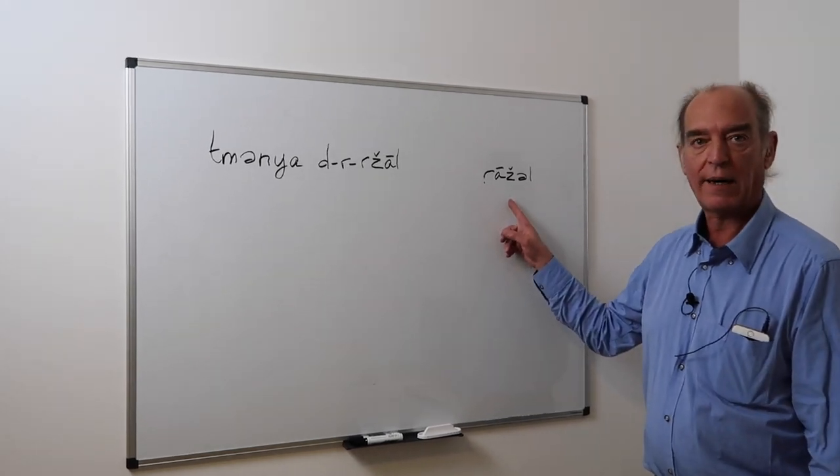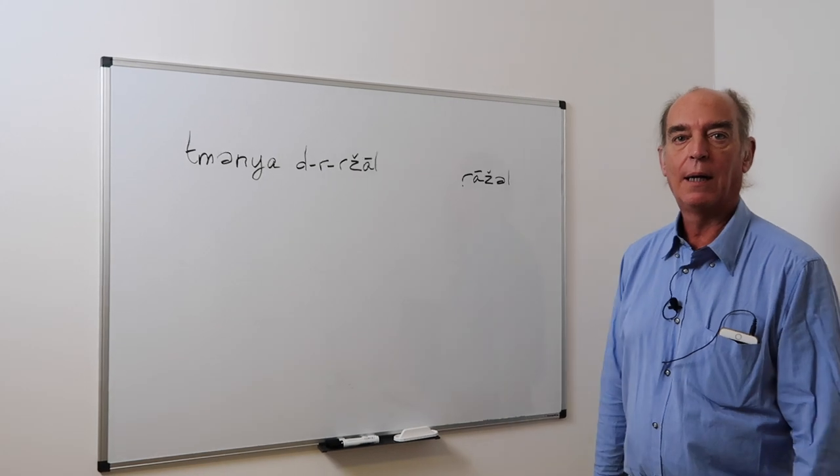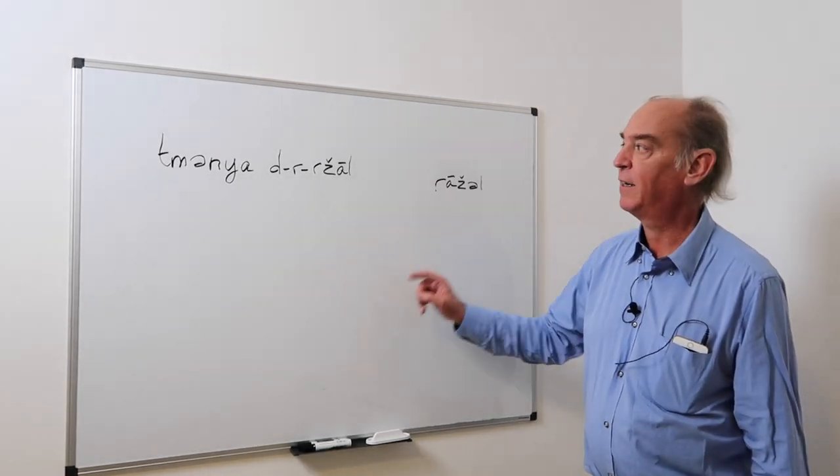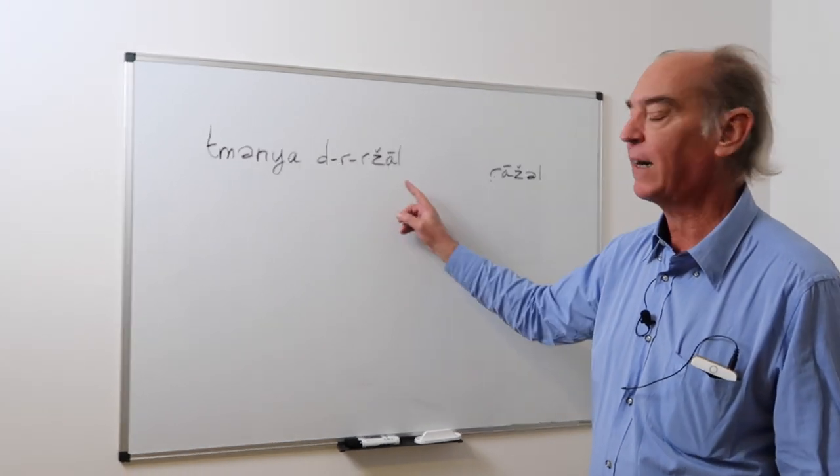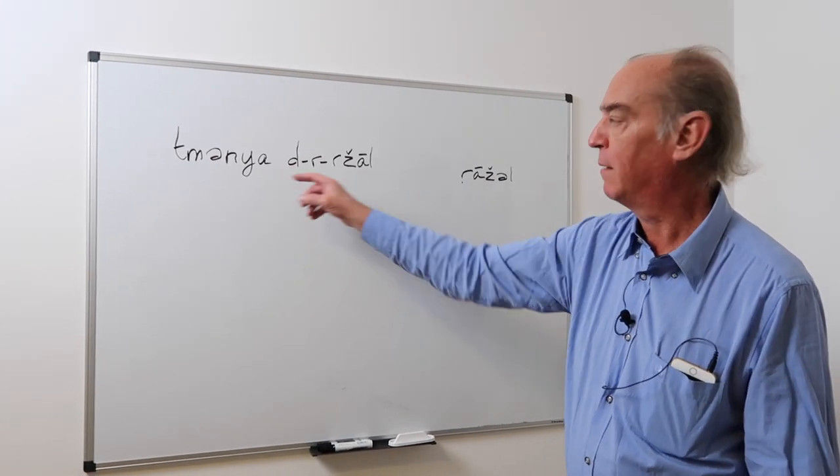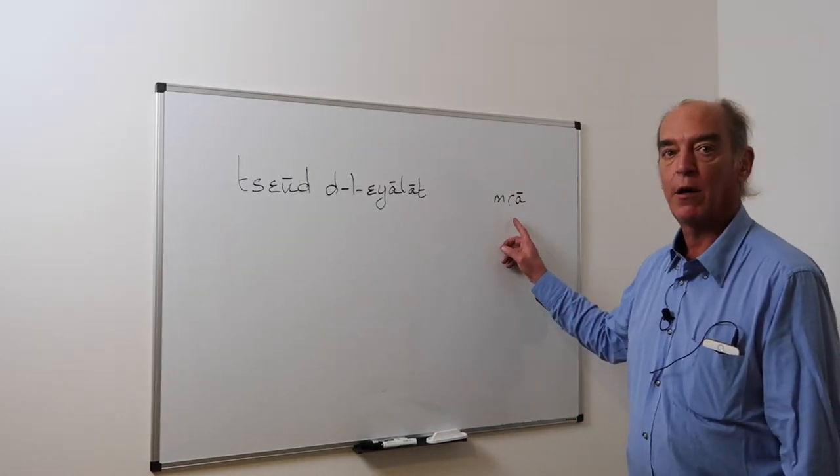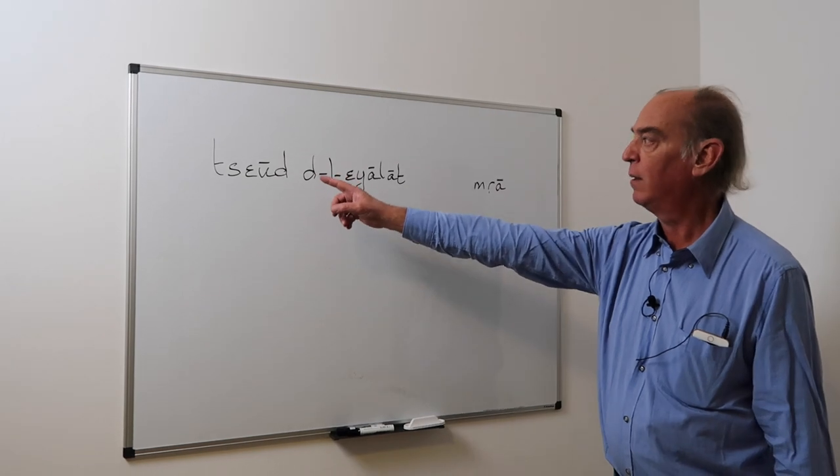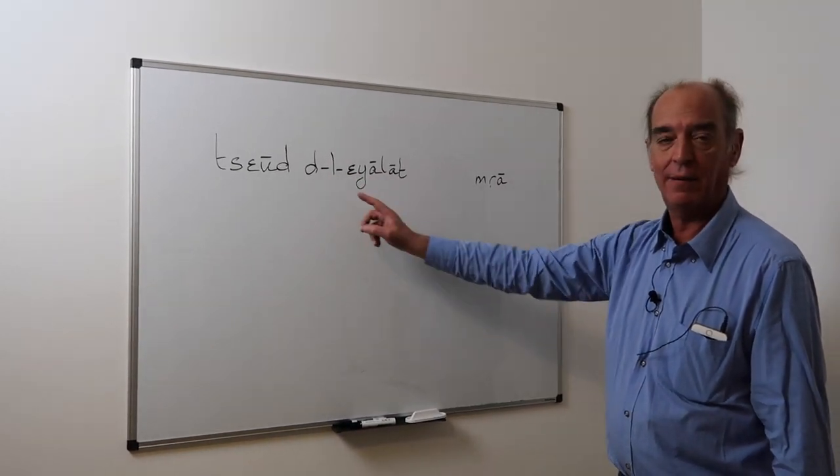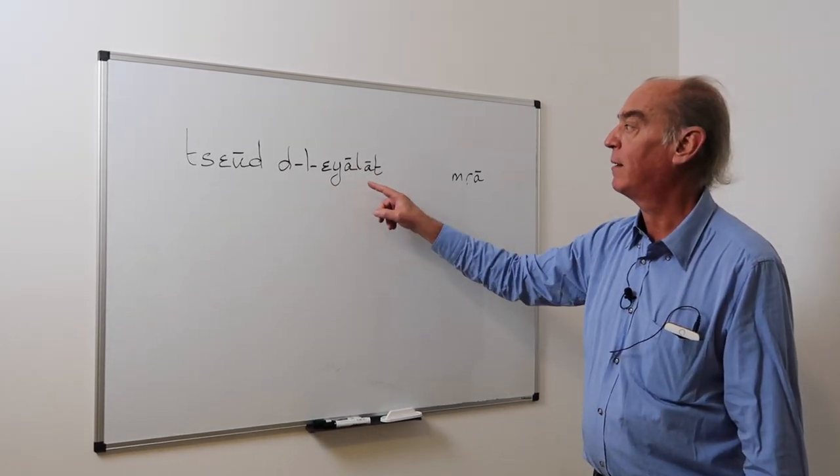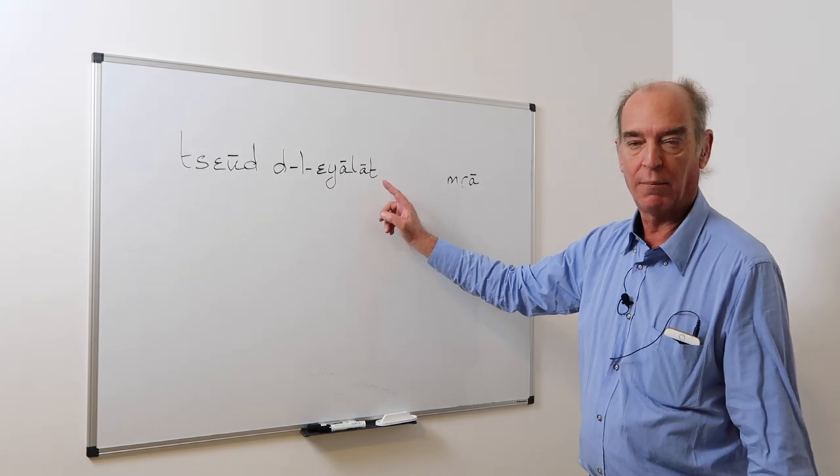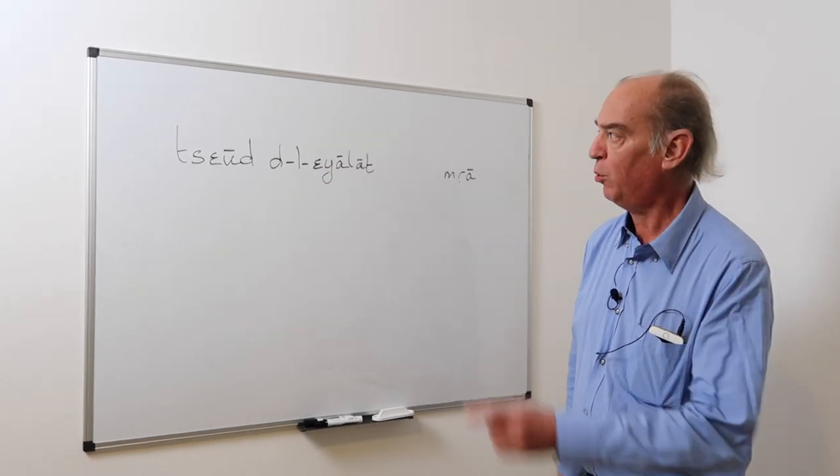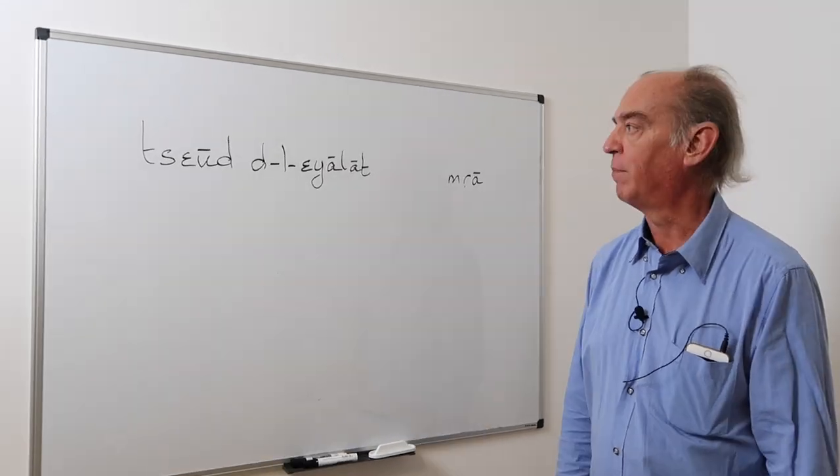This is a word you already know. Rajl stands for man or husband. Remember rajli. The plural of rajl is rjal. T'sminya d rjal, eight men. Another word you know, mrah, a woman. Remember mrahati, my wife. T'saud d l'ayalat. The plural is very irregular, from another root. The plural of mrah is l'ayalat. Take care of the a'ayn. Nine women.